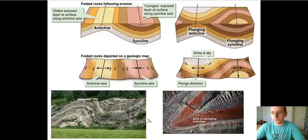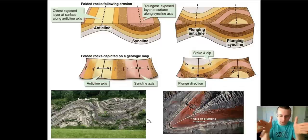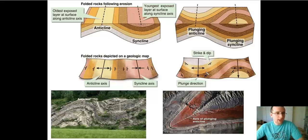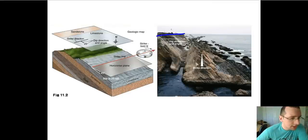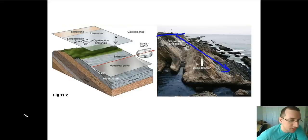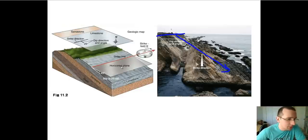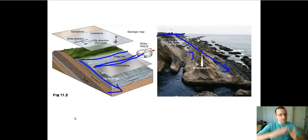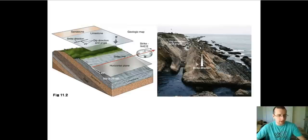Folds happen because of all kinds of stress, but typically because of compression stress, which causes the rock to form synclines and anticlines. It can also happen because of shear stress where the rocks are folded sideways relative to each other. The strike and dip relationship shows the strike line — where the dip will start from — and the dip line where the rock actually dips from that fold, misaligned with the reference point it's supposed to have.